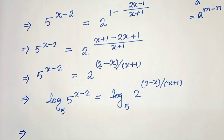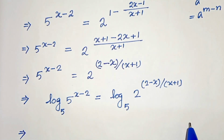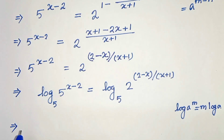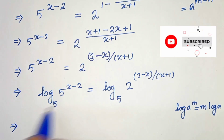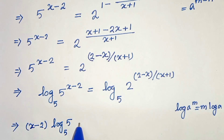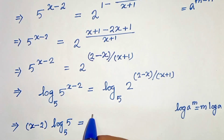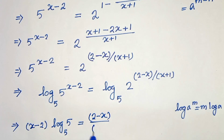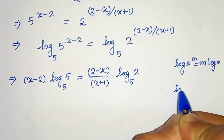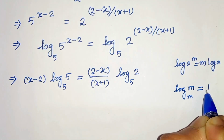In the next step, we know from the logarithmic property that log of a to the power m equals m times log of a — that means the power comes in front of the log. So we get (x minus 2) times log base 5 of 5 equals (2 minus x) divided by (x plus 1) times log base 5 of 2. And we know that log base m of m is 1, so log base 5 of 5 equals 1.